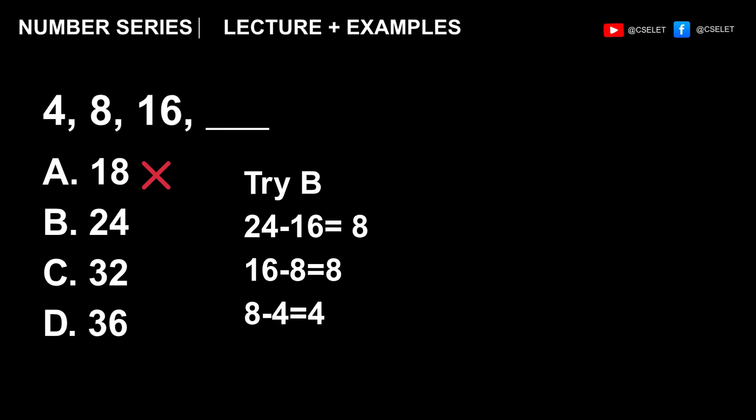Letter B is 24. So if addition didn't work earlier, let's try subtraction. So, 24 minus 16 is 8, okay. 16 minus 8 is 8, okay. It seems like there's a pattern, no? But let's go to the last one. 8 minus 4 is 4. So that means we still don't have a pattern. Therefore, letter B is wrong.